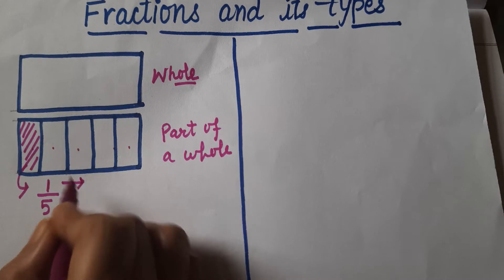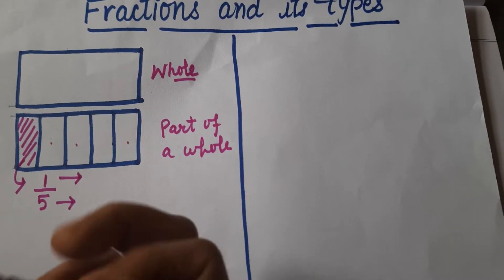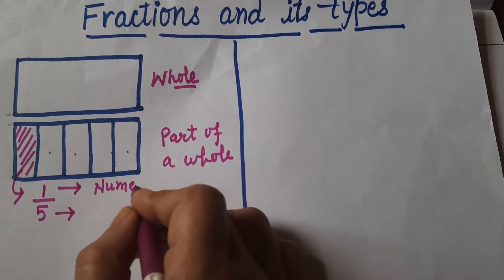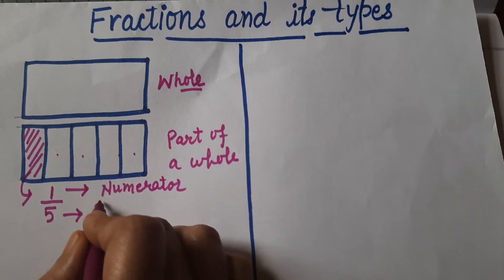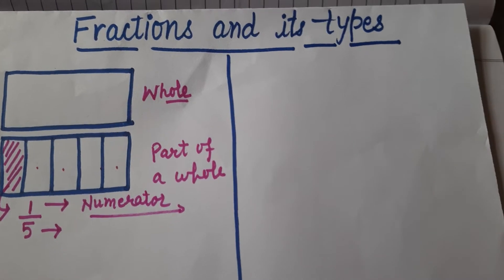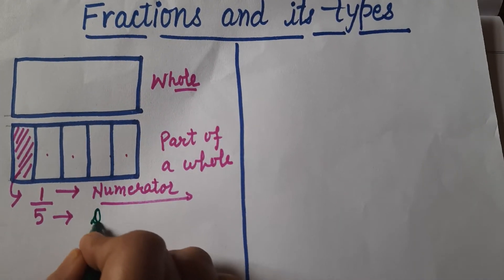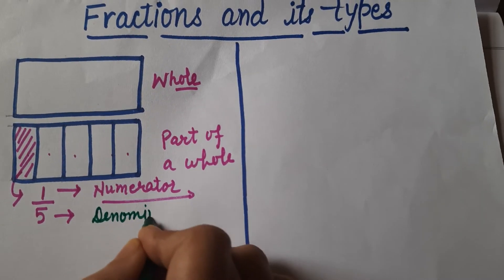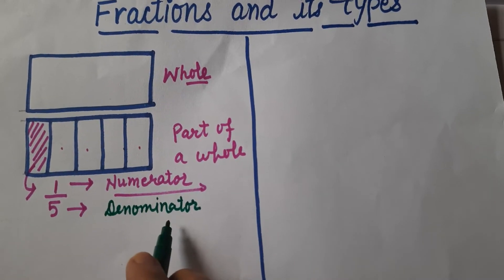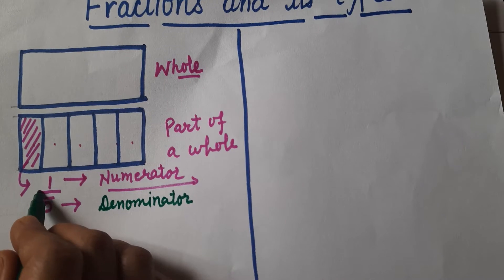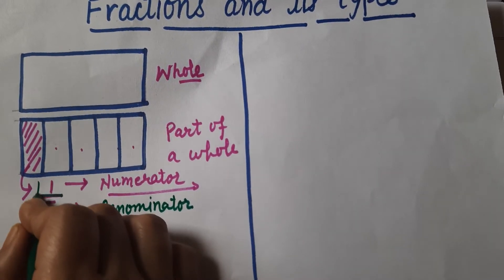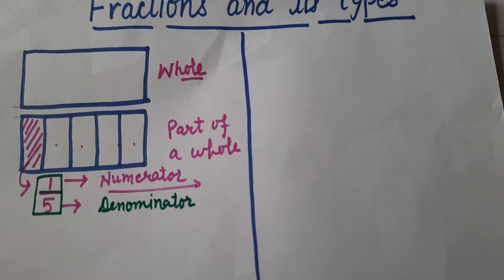The upside of the fraction is known as the numerator, and the downside is known as the denominator. There is also a separator line in between. We write any fraction in this form.